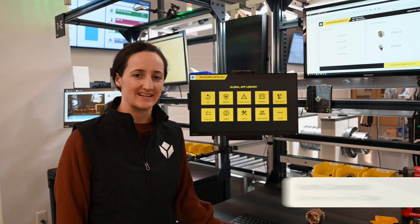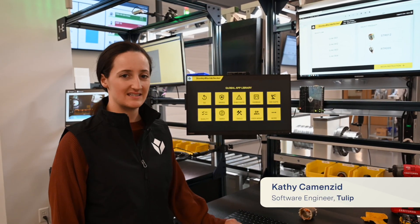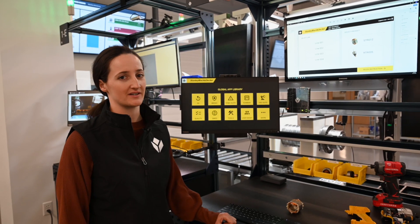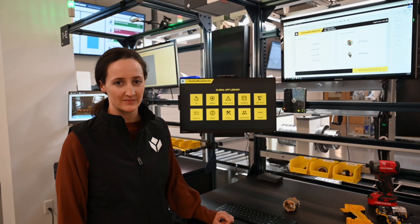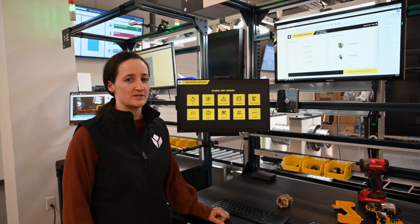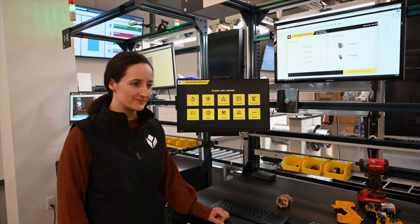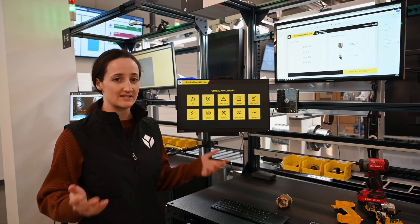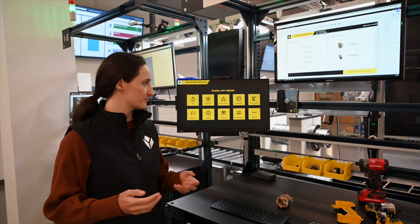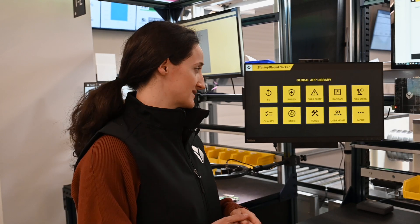Hi, I'm Kathy and today we're going to be showing how Tulip can be used to easily monitor quality and do quality inspection on parts. In this demo we partnered with Stanley Black and Decker, who is rolling out Tulip across 156 sites. Since they have so many sites, they'd like to provide a standard set of apps that provides standardization across all their processes.